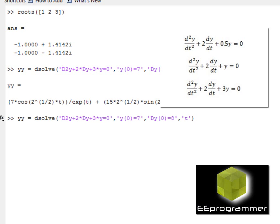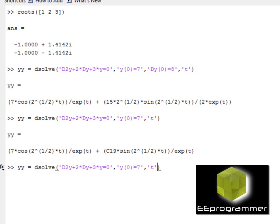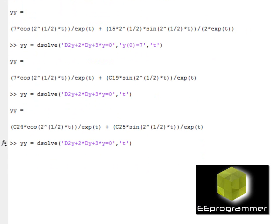Assume I take out one of the initial conditions. MATLAB is still able to give me the answer, but it will give me C19. The C19 is a constant, it is an unknown. If I take out one more initial condition, it will give me another unknown.